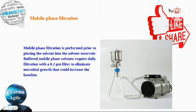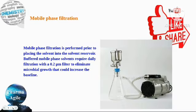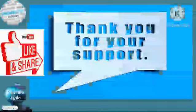The filtration process removes contamination from the solvent. This is the main point. The 0.2 micrometer filter paper is used for bacterial removal, while the 0.45 micrometer filter paper is used for standard HPLC mobile phase filtration. Please like, share, and subscribe to the channel.